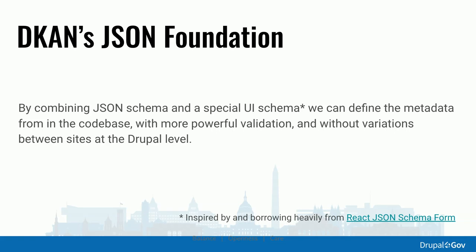To sum it up: with JSON Schema and our UI Schema, we can define the metadata in the codebase and have it in version control. It gives us more powerful validation and means the underlying DKAN module doesn't have to accommodate lots of different field configurations — you'll always have the same two fields on your datasets. The other really big feature that people will come to DKAN for is our CSV importer.